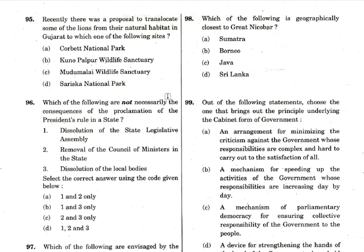Question 95: The Asiatic Lions in Gujarat's Gir Forest were shifted to another national park. Corbett is in Uttarakhand, Kuno Palpur Wildlife Sanctuary is in Madhya Pradesh, Madhumalai is in Tamil Nadu, and Sariska is in Rajasthan. Possible candidates are Madhya Pradesh or Rajasthan since they won't shift them far. If you've read about it, the answer is Kuno Palpur Wildlife Sanctuary. Answer is option B.